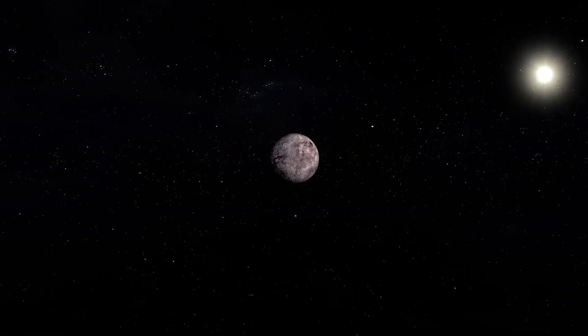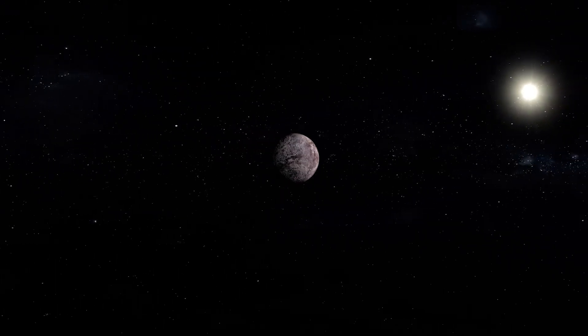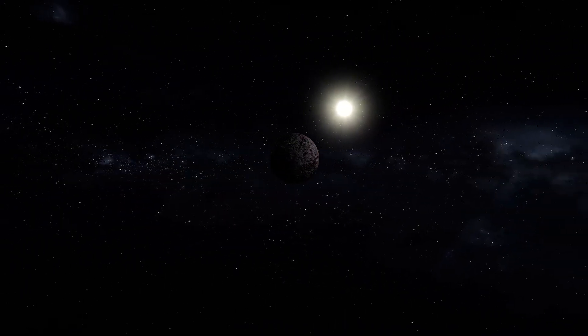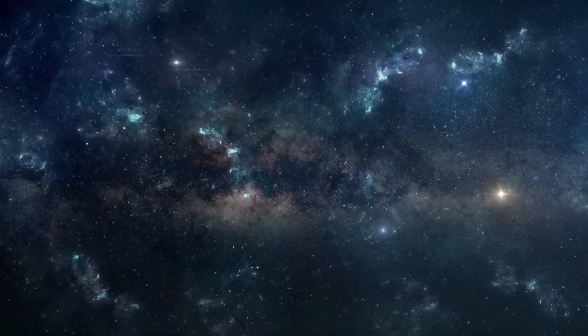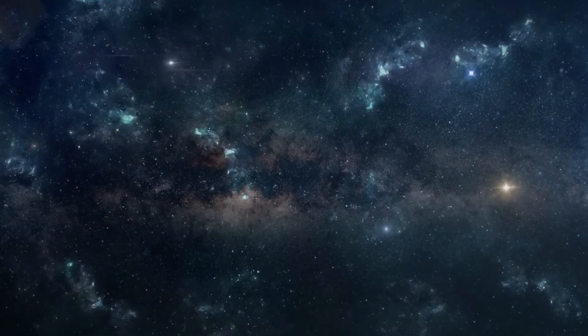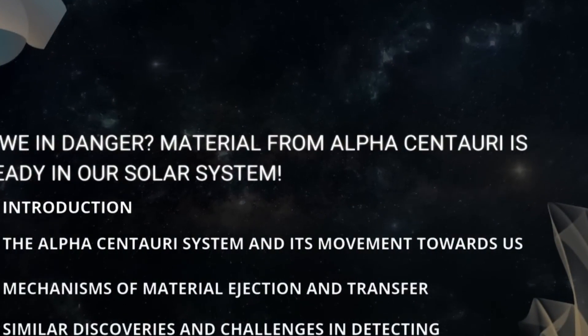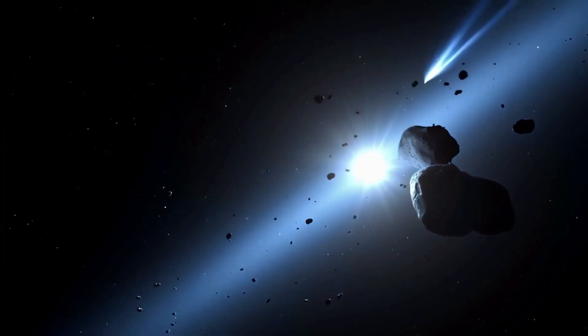Let's start by getting to know our neighbor. Alpha Centauri is a triple star system located just over four light years away from us. It comprises three stars: Alpha Centauri A and B, which form a close binary pair, and Proxima Centauri, a faint red dwarf orbiting the duo at a greater distance.